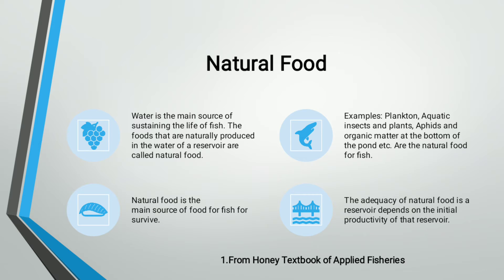Water is the main source of sustaining the life of fish and other aquatic animals. Foods that are naturally produced in the water of a reservoir are called natural food, and natural food is the main source of food for fish survival. As food is necessary for all metabolic activities, examples of natural food include plankton, aquatic insects, plants, aphids, and organic matter at the bottom of the pond — all found in natural resources, not provided from outside.